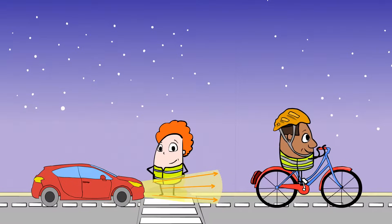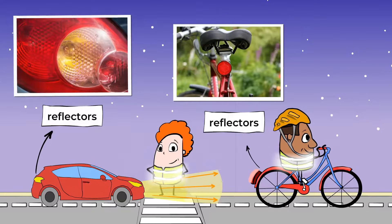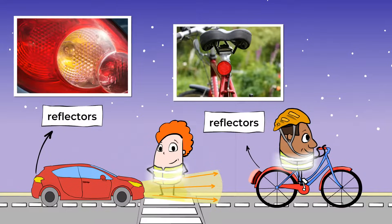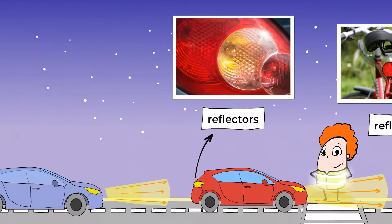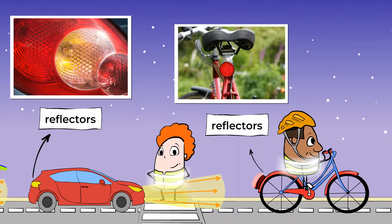And reflectors found on the back of a bicycle or car work in a very similar way to the reflective vests. A passing car's headlights will hit the reflectors and bounce the light into our eyes, making sure that we can see that there's a car or a bicycle there. These devices use the reflection of light to keep everyone safe.